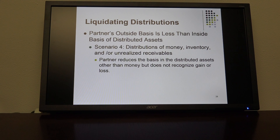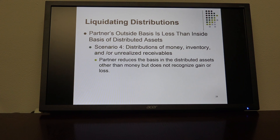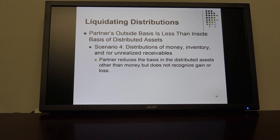Scenario three is where the partner's outside basis is less — not more — than the inside basis of distributed assets. In this case, just like with operating distributions of money only, it's going to be a gain. You simply take the amount realized in money minus the partner's outside basis, which is less than the amount realized, and you have a capital gain.